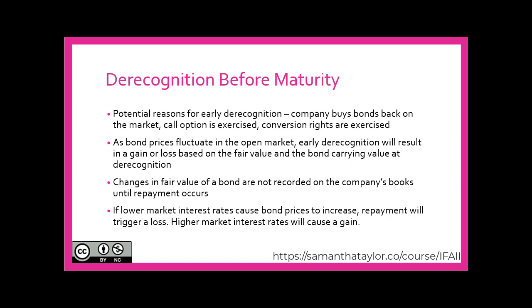Changes in the fair value of the bond are not recorded in the company's books until repayment occurs. So fair value may fluctuate between the time when we issue it and settle it. Nothing happens until we pay it, and if we pay it back early and we either settle for more or less than it's presently worth, then that will trigger a gain or loss on the bond.